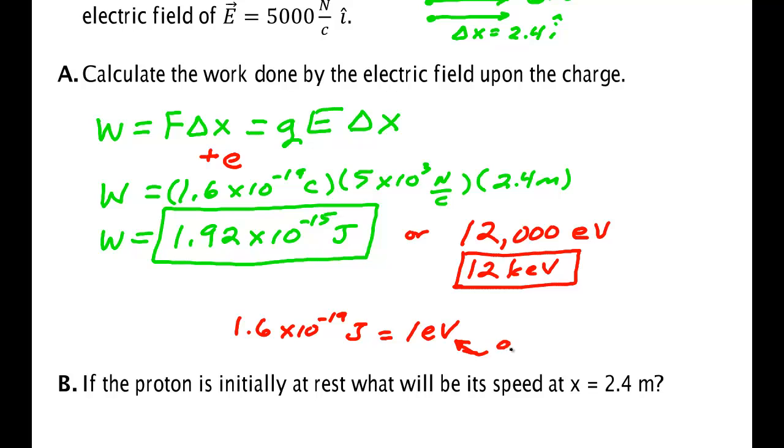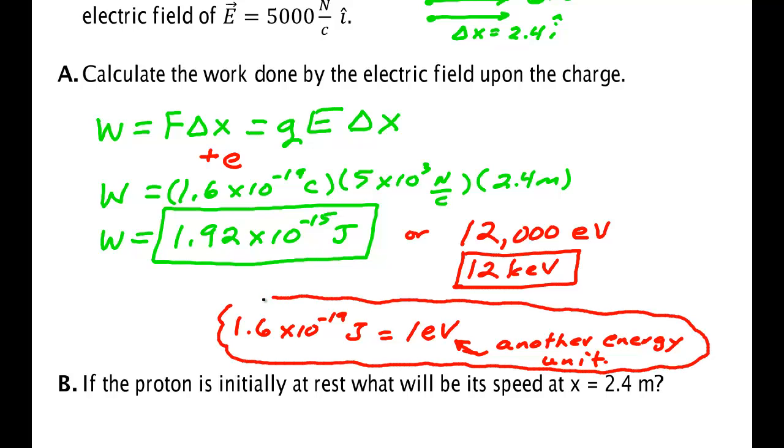This is a more convenient unit of energy than is our normal joule. The conversion between them is 1.6 by 10 to the minus 19 joules is equal to 1 electron volt. And like I said, this is another energy unit which is much more convenient in working problems involving electricity and particle physics. So we prefer it to the SI unit of joules.